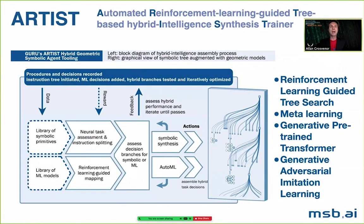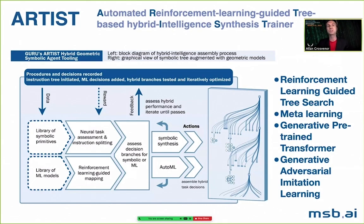How do you teach an autonomous system to set up and run someone else's software? Simulations are computationally expensive, and human expert sessions are expensive, so data efficiency is critical. We invented a scalable, data-efficient learning process for complicated procedures where decisions are explainable. We use a hybrid of symbolic AI and machine learning in our Automated Reinforcement Learning Guided Tree-based Intelligence Synthesis Trainer — or ARTIST.